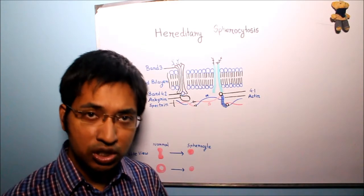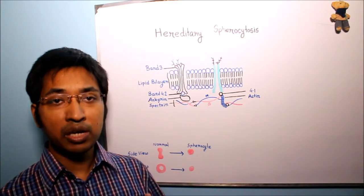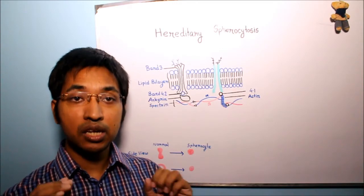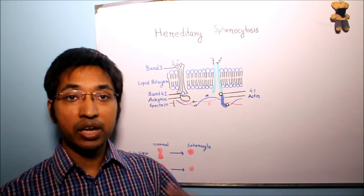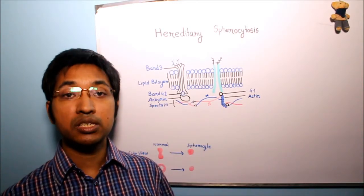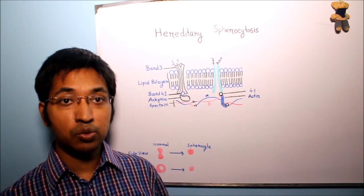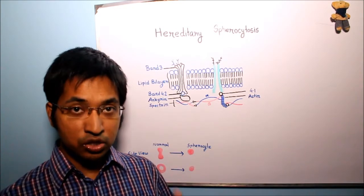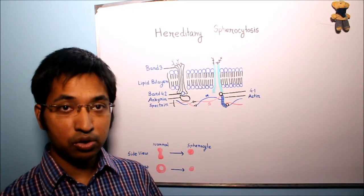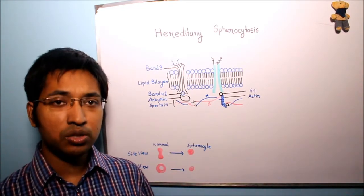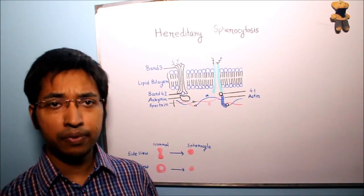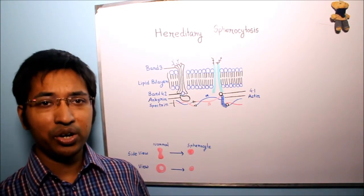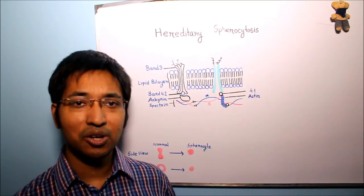The fourth point is that these spherocytes are more rigid and less deformable compared to normal biconcave disc-shaped red blood cells. These rigid and less deformable spherocytes, when passing through the splenic circulation, may become entrapped and will be vulnerable to destruction by the splenic macrophages. So now we are ready to define this disorder.